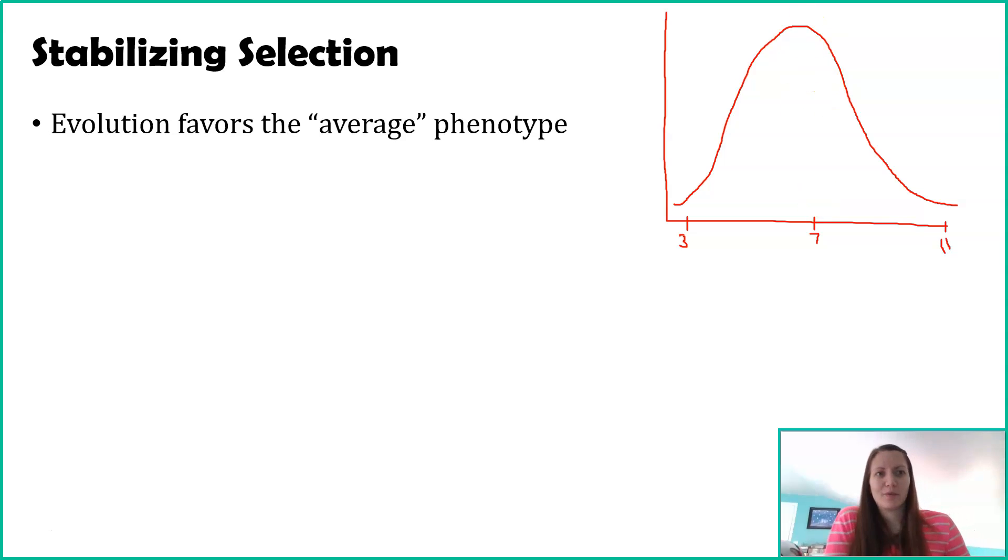Baby weights, which is a characteristic, kind of follows a bell curve. Most babies are around seven pounds, with very few at three and very few at 11. Stabilizing selection is saying if something's happening in the environment to push it towards seven even more.